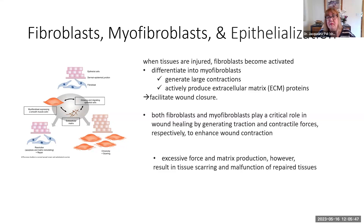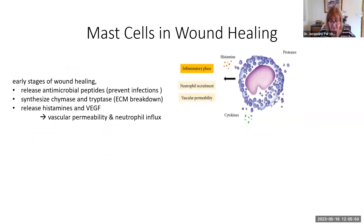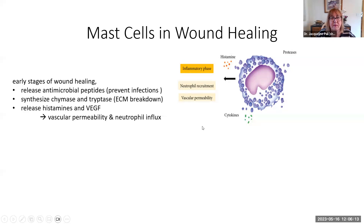Let's talk about mast cells. We talked about mast cells very early on in the first stage of wound healing, where we had release of histamines. There were also releases of proteases that can help prevent infections and break down tissues, and mast cells releasing cytokines like vascular endothelial growth factors - important for having fluid enter the acute wound and having an influx of neutrophils.